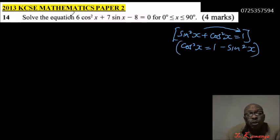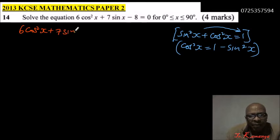We are going to use this to substitute cos²x so that we'll be left with sin. So you come here and you see we have 6 cos²x + 7 sin x and here we have - 8 = 0.